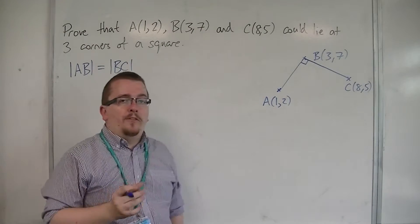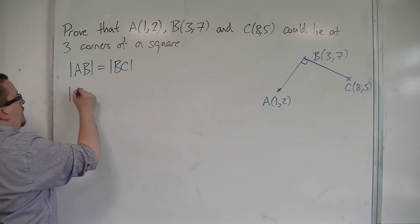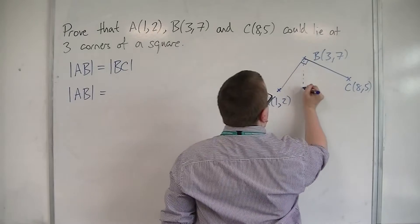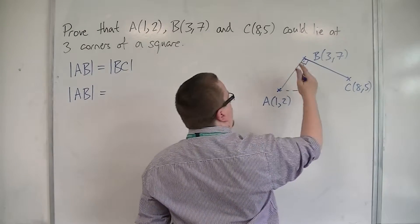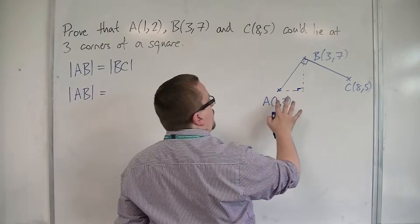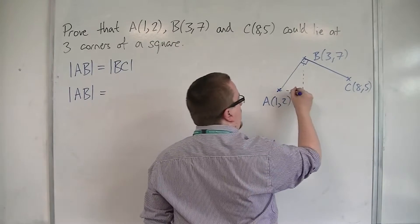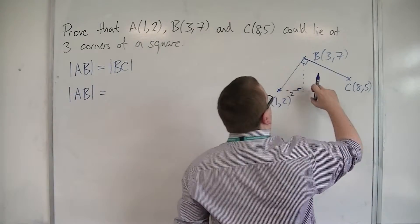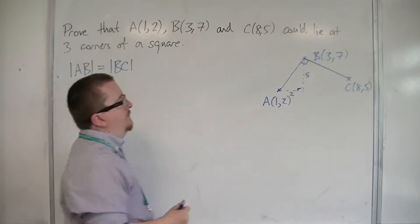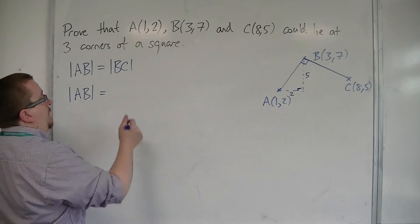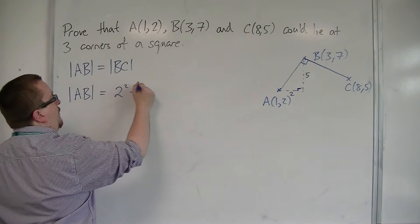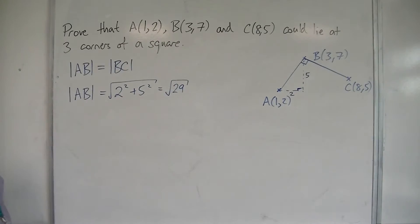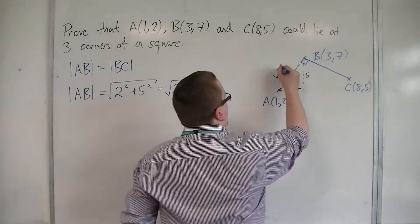First of all, let's look for the length of AB. So, we want to find the length of that hypotenuse. So, this is going from coordinate 1 to coordinate 3, and so the base is of length 2. The height is going from 2 to 7, and so that would be of length 5. And so, using Pythagoras, that's the square root of 2 squared plus 5 squared, which is the square root of 29. So, I know that the length of that line is root 29.